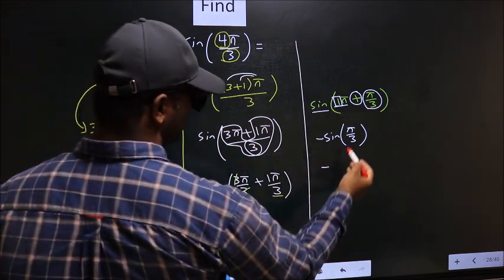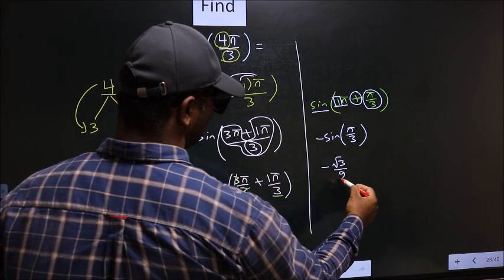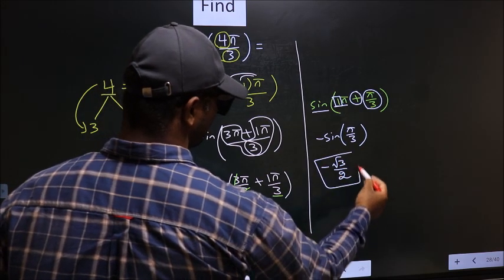So that is minus sine π by 3 is root 3 by 2. So this is your answer.